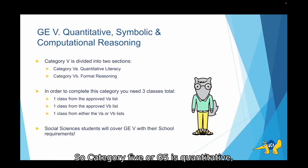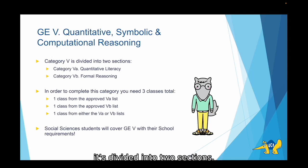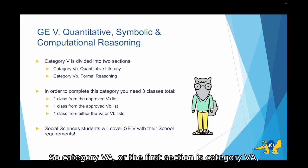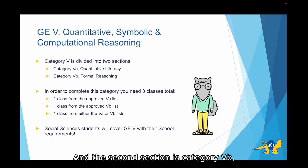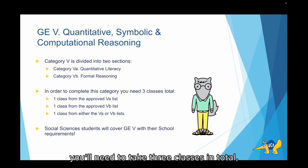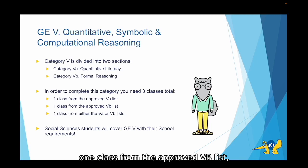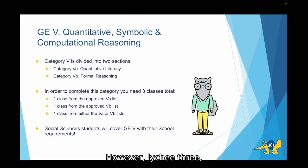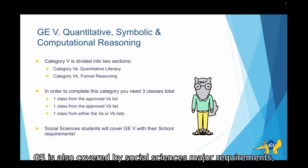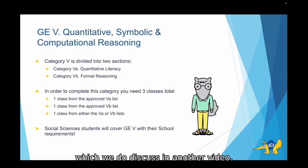Category 5, or GE 5, is Quantitative Symbolic and Computational Reasoning. This category is divided into two sections: category VA, which is Quantitative Literacy, and category VB, which is Formal Reasoning. In order to fully complete this category, you'll need to take three classes in total — one from the approved VA list, one from the approved VB list, and one additional class from either list. However, like GE 3, GE 5 is also covered by Social Sciences major requirements, which we discuss in another video.